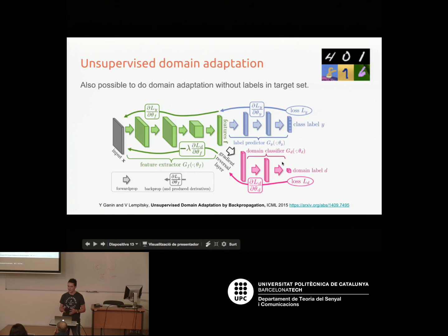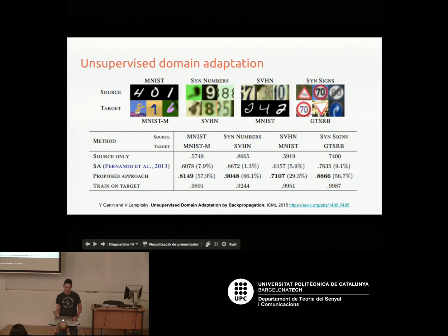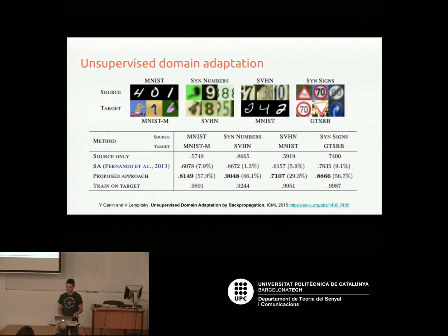This is very similar to the adversarial network idea covered later. In terms of results on MNIST: if you just train on the clean source and test on the noisy target, you get about 57% accuracy. If you had labels for the target, you'd get 98%. Using the domain adaptation technique with no labels for the target, you go from 57% to 81% — a pretty significant improvement assuming you have no labels for the target task.